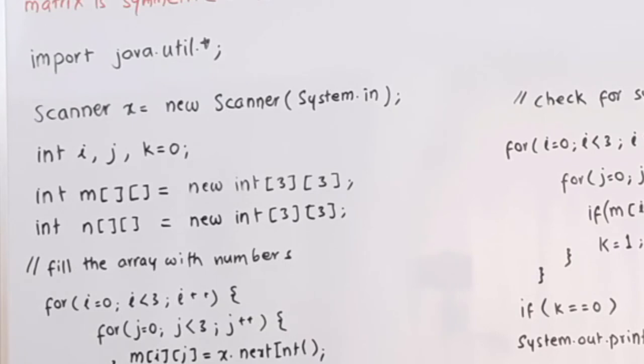For that we are going to use the Scanner class. For that we will be using the utility package, so first import java.util.*. Then create a Scanner object: Scanner x = new Scanner(System.in). We will require three integer variables i, j, and k. We will initialize k to 0.